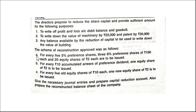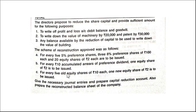The first reconstruction term: for every five 5% preference shares of ₹100 each, three 8% preference shares of ₹100 each and twenty equity shares of ₹2 are to be issued. You should be very clear — don't look at the amount first, just see that for five old preference shares we are giving three new preference shares and additionally twenty equity shares. Then, for every ₹10 of accumulated preference dividend arrears, one equity share of ₹2 is to be issued. For every five old equity shares of ₹10 each, one new equity share of ₹2 is to be issued. Give the necessary journal entries and prepare the capital reduction account and balance sheet.